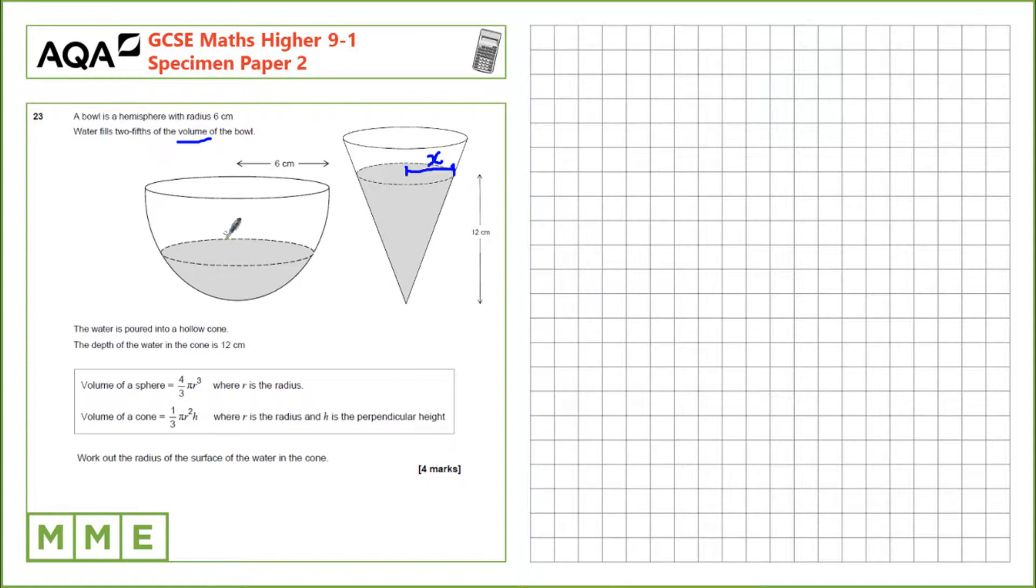We know that 2 fifths of the volume is filled with that, so if we knew the volume, we could multiply by 2 fifths to get the actual amount of water. Let's calculate the volume of the hemisphere. We know the volume of a sphere is 4 thirds pi r cubed, and a hemisphere is half of that, so the volume of the hemisphere will be 2 thirds pi r cubed, because 2 thirds is half of 4 thirds.